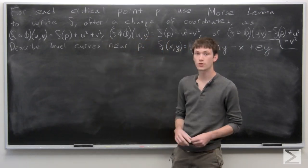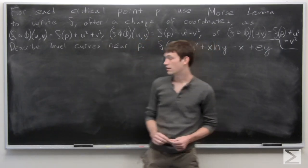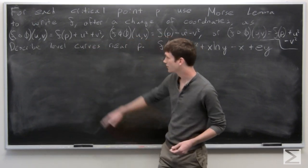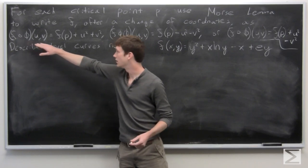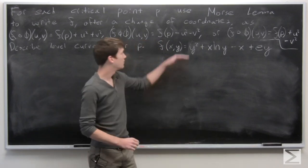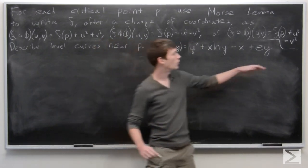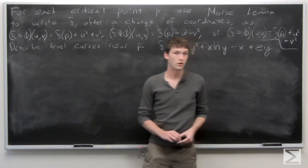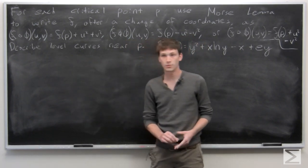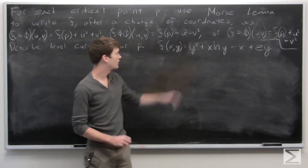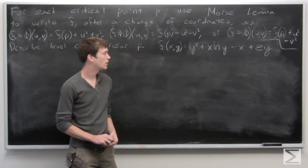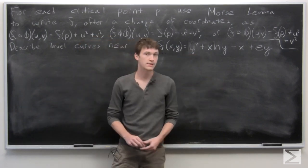In this problem we're asked to, for each critical point p, use Morse Lemma to write f after a change of coordinates in one of the following three forms: f of p plus u squared plus v squared, f of p minus u squared minus v squared, or f of p plus u squared minus v squared. We want to describe the level curves near p. The function f of x, y is given as y squared plus x times the natural log of y minus x plus e times y.